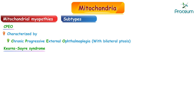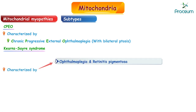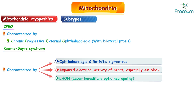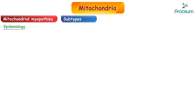Kearns-Sayre syndrome is characterized by ophthalmoplegia and retinitis pigmentosa, and impaired electrical activity of the heart, especially AV block. LHON, or Leber hereditary optic neuropathy, is another condition. Let's now discuss some of the epidemiology.